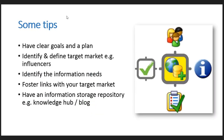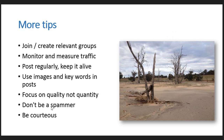Some tips for engaging with your community of interest: firstly, have clear goals and a plan — in the case of Perth NRM we have a monthly schedule of themes. Identify your target market and influencers and form a relationship with them through LinkedIn. Identify the information needs. Funnel links to the target market and have a knowledge or information repository. A lot of people have WordPress blogs — they're very easy to set up and they also show you stats.